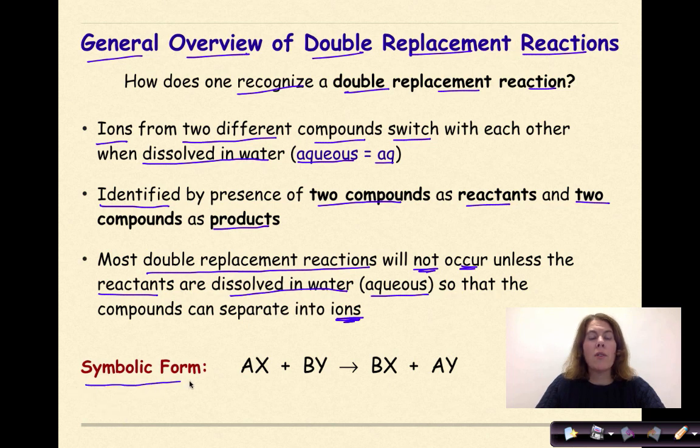The symbolic form for a double replacement reaction is AX plus BY yields BX and AY where the A is going to hook up with the Y and the B is going to hook up with the X. So the idea here is that the ions are going to switch partners.